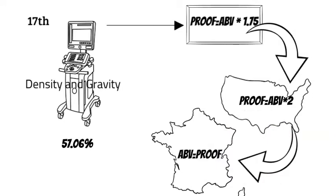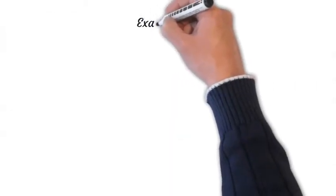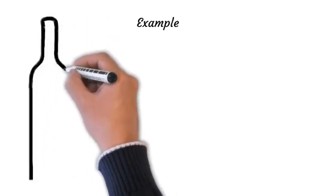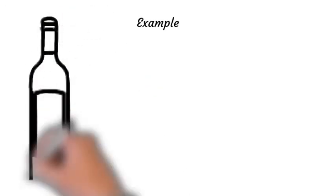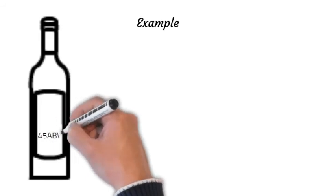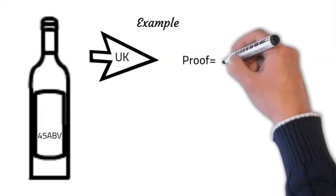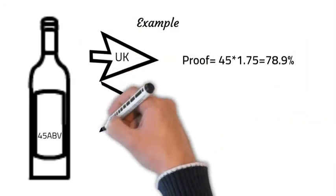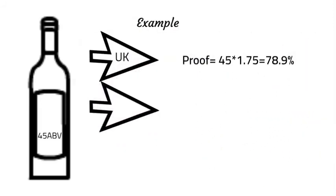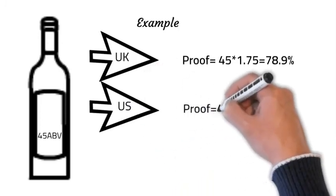Let's take an example for better understanding. So if there is a liquor bottle with 45% ABV, then in UK it will translate to 78.9 proof, while in US it will be 90 proof, and in France it will be 45 proof.